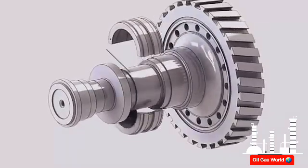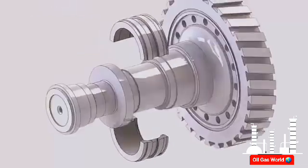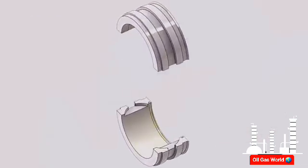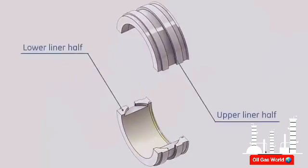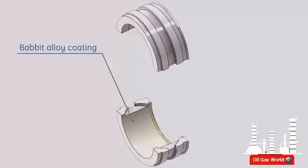The bearing liner and the journal surface are machined on the compressor forward stub shaft. The bearing liner consists of two halves fitted on the bearing housing. The liner inside faces are machined to make convergent oil clearance, in which oil pressure increases around the shaft journal to support it. After machining, these faces are coated with Babbitt alloy.